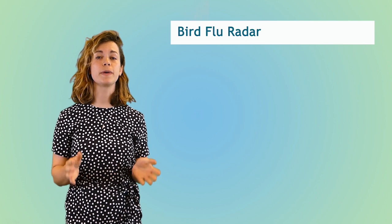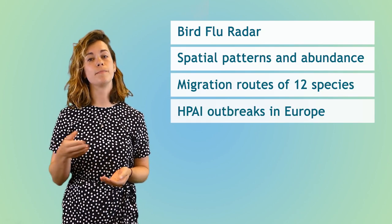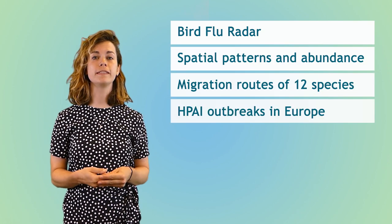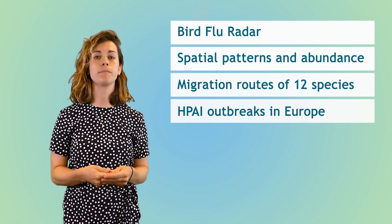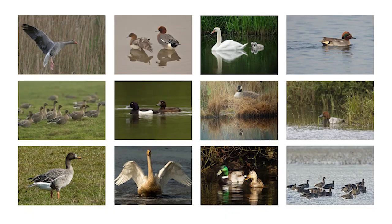To assess the probability of HPAI outbreaks in Europe, a spatiotemporal risk assessment tool was developed. This tool, which is called the Bird Flu Radar, is based on spatial patterns in abundance, on the migratory routes of 12 wild bird species, and on HPAI outbreaks that are reported in Europe. The 12 species chosen account for 89% of all European ring recovery data for waterfowl and include many of the most widely distributed F-SAT target species. This video will explain how this tool works.